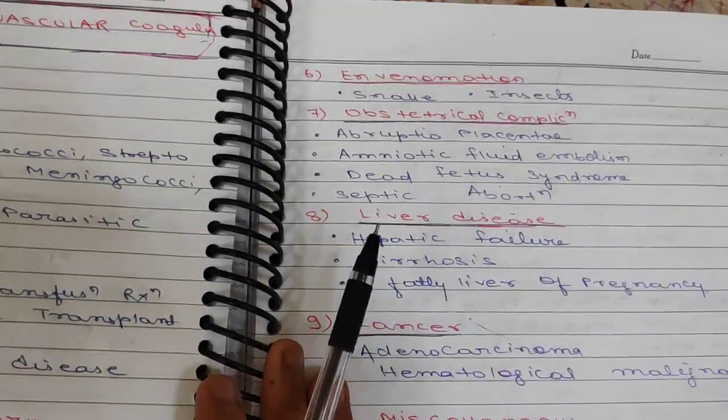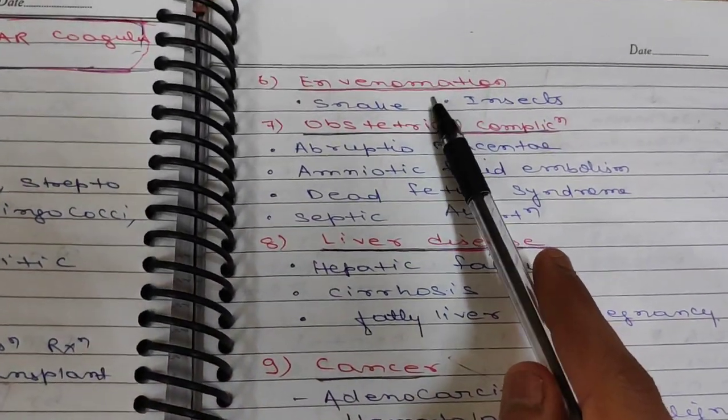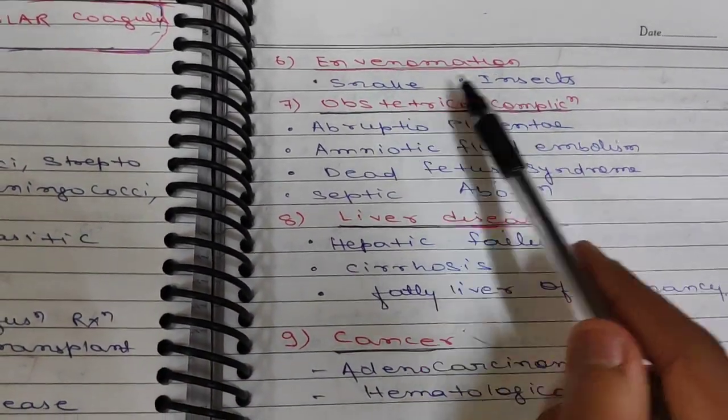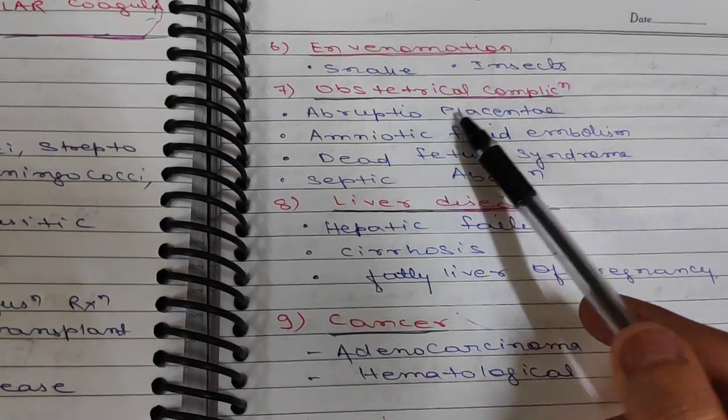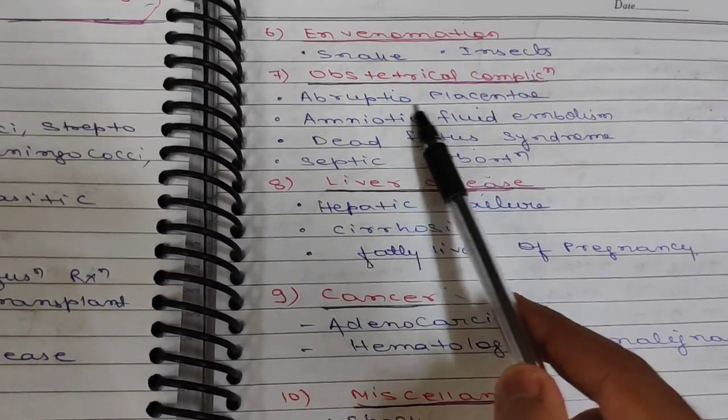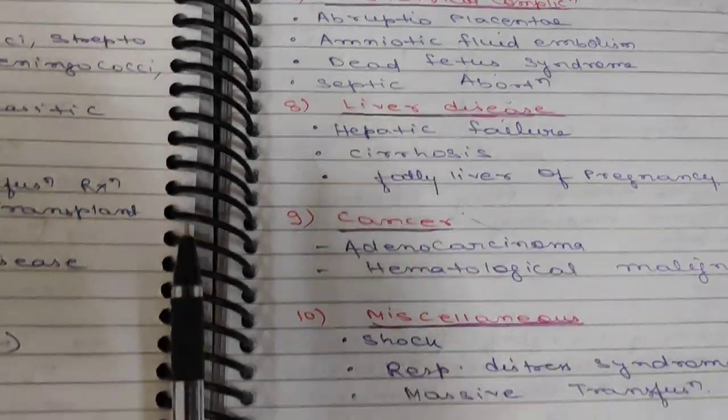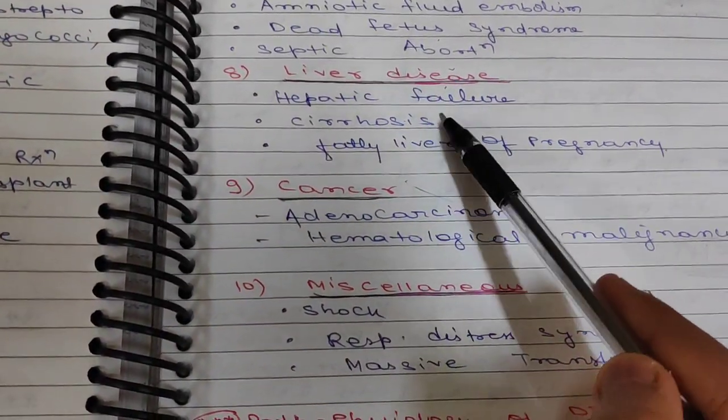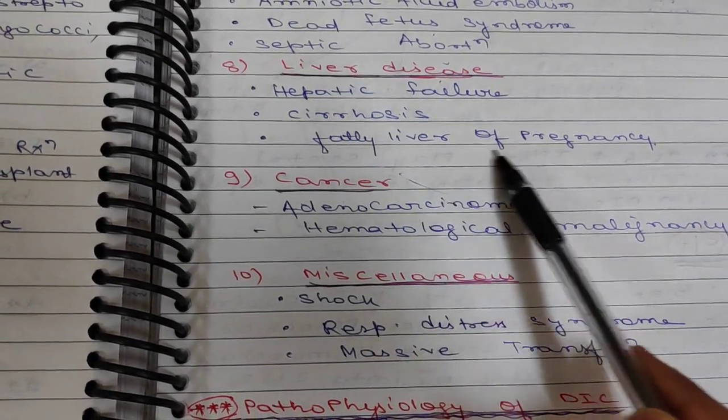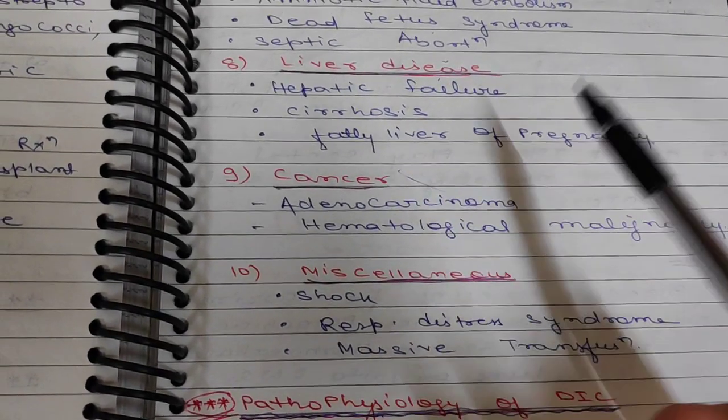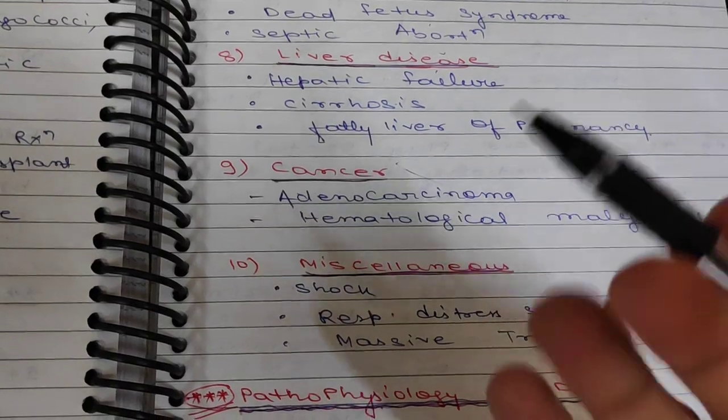The next cause is envenomation from snake or insect bites. Obstetrical complications such as abruptio placentae, amniotic fluid embolism, dead fetus syndrome, and septic abortion can also cause DIC. Liver disease such as hepatic failure, cirrhosis, and fatty liver of pregnancy all lead to DIC.